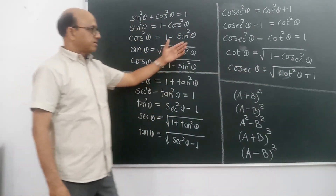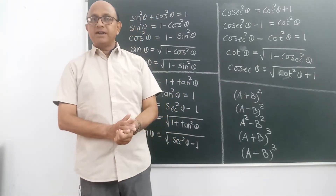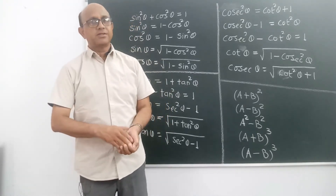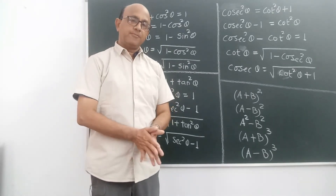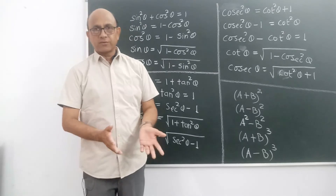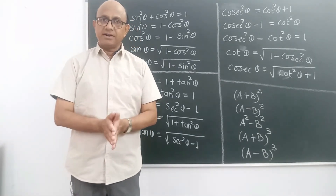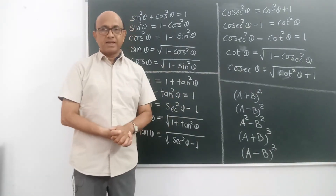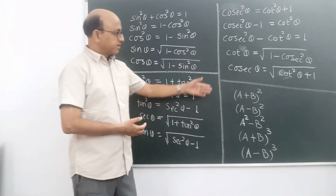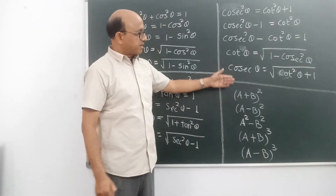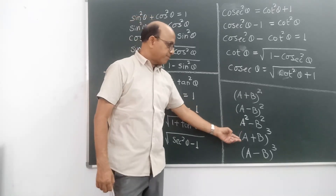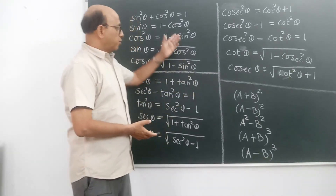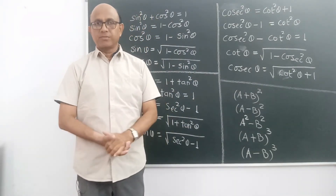Is tarah se maine 15 equations aapke saamne tayaar kar di hain. Inка use karna hai trigonometrical identities ke verification ke liye. Yaad rakhna hai: sin theta into cosec theta is equal to 1, sec aur cos ka relationship inverse hota hai, aur cot aur tan ka bhi inverse relationship hota hai — inke product mein 1 aata hai. Aur identities prove karte samay ek aur important baat: algebra ke basic formulas — (a+b)², (a-b)², a²-b², (a+b)³, (a-b)³ — yeh yaad hone chahiye. Problems ke samay hum inका use discuss karenge.